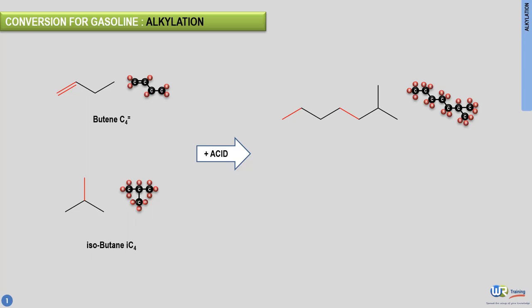In this example, the reaction of butene and isobutane in the presence of an acid catalyst yields alkylate, an isoparaffin. Alkylate is an excellent gasoline blending component as it has no sulfur, no olefins, and no benzene.